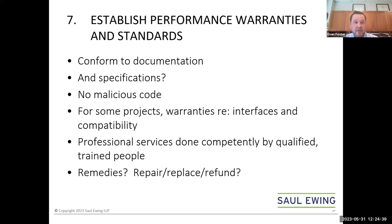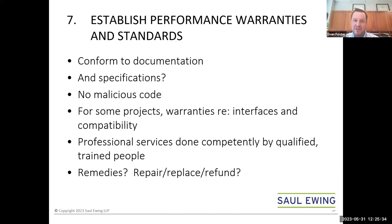Another common and increasingly important warranty is a warranty against malicious code. These days you want to make sure that malicious code includes ransomware — unfortunately ransomware is a fact of life. Having some protection from your vendors in the event they transmit any kind of malicious payload is very important. Vendors often try to couch these warranties by saying they'll use 'industry standard technology' or they 'won't knowingly send you malicious code.' From the customer perspective, neither of those qualifications is particularly helpful, because you wouldn't expect vendors to intentionally send malicious code. As a matter of risk allocation, getting an unqualified rep and warranty about no malicious code is important.